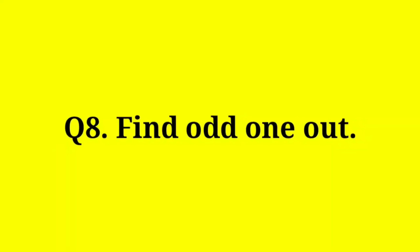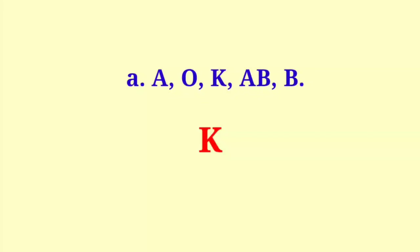Question 8 – Find the odd one out: A – O, K, AB, B. The odd one out is K, because A, O, AB, and B are the main blood groups of the human blood group system.